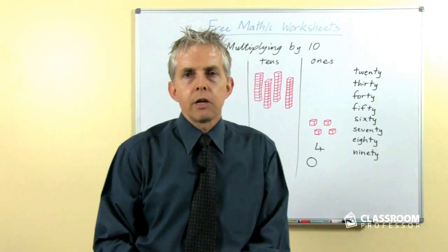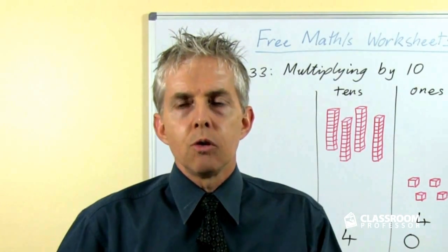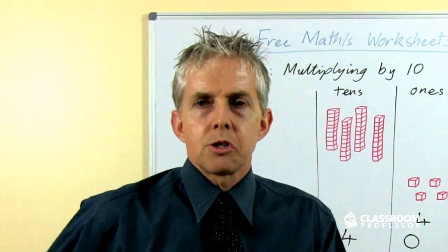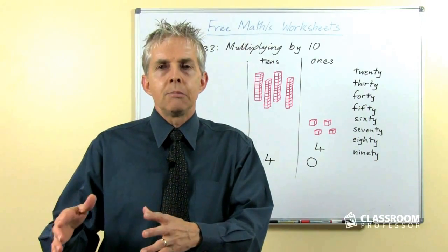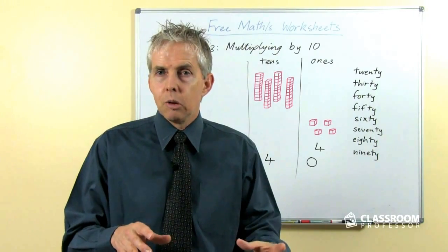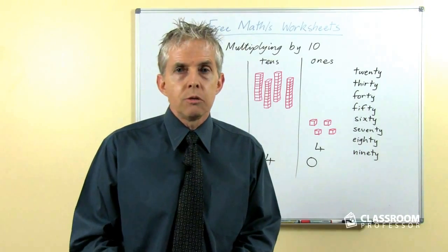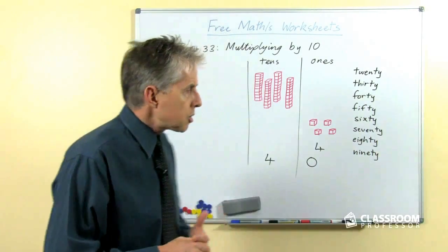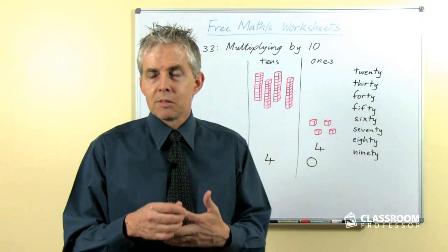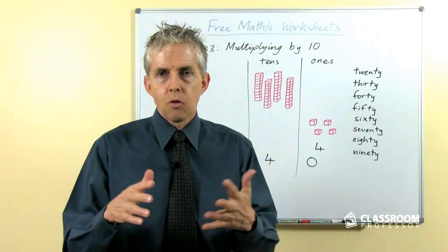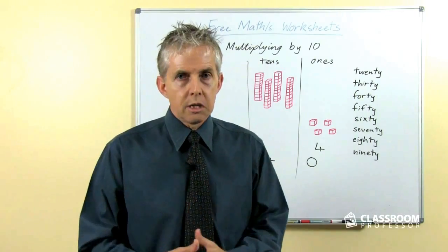In checking the curriculum documents for Australia, the UK and the United States, there is a year level or grade level for each of those countries at which students don't learn all of the multiplication facts. When they first do multiplication number facts they learn a selected group of the easier ones. In Australia that's year 3, in the UK it's year 2, and in the USA it's grade 2. The book covers 2x, 3x, 5x and 10x for all those countries, plus 4x which is included in the Australian set.